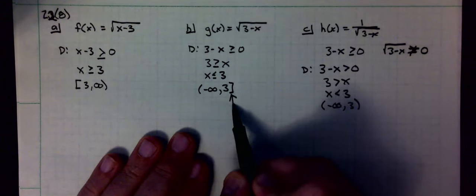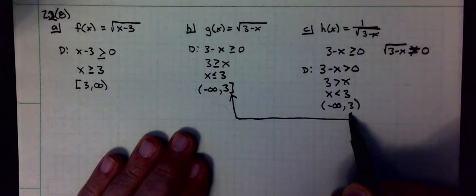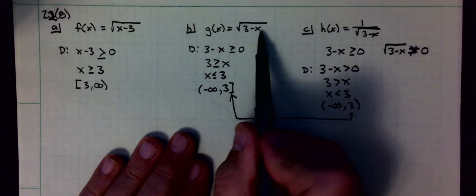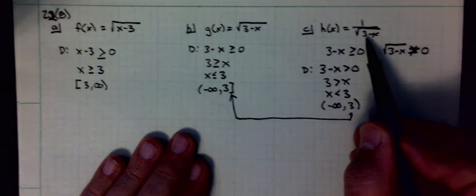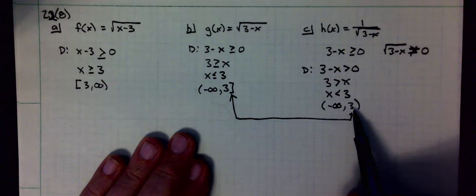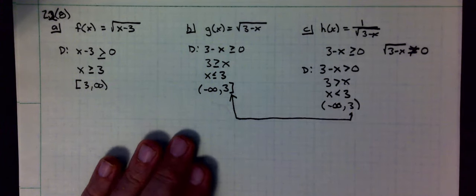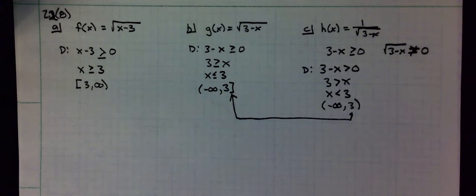This is how they're different. g of x actually touches the 3 because it is allowed to be zero. h of x can't touch the 3. It could be like 3.00, a bunch of zeros and a one. That would still keep it slightly above.